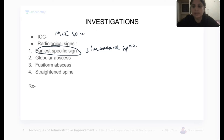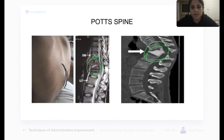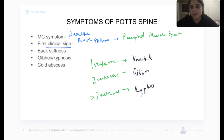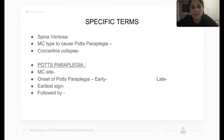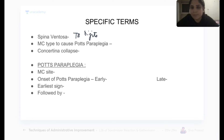The treatment for Pott's spine is anti-tubercular treatment. Spina Ventosa refers to TB of the digits — TB involving the small bones of the fingers and toes. The most common type to cause Pott's paraplegia is the paradiscal type.